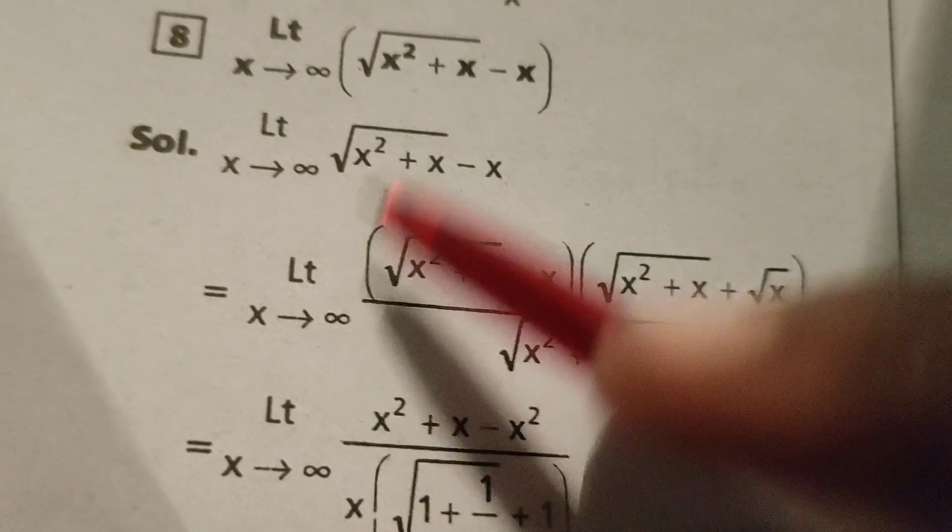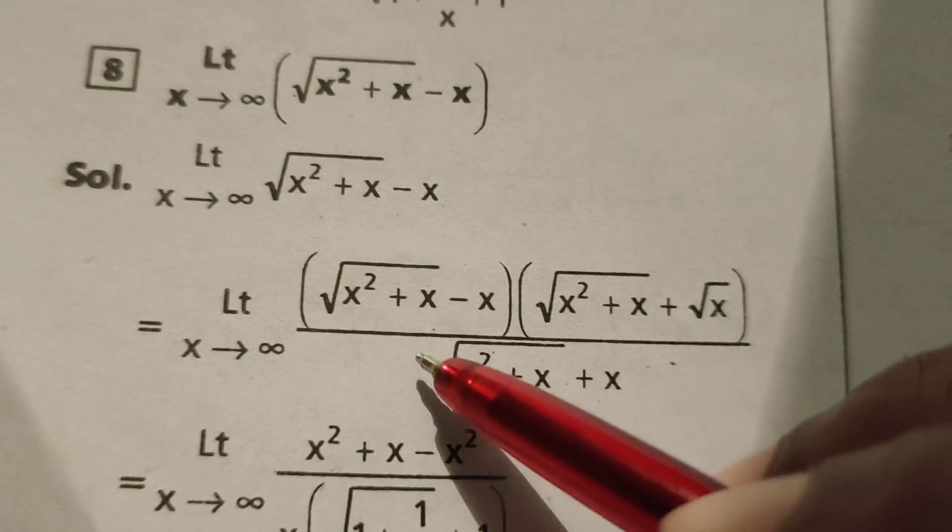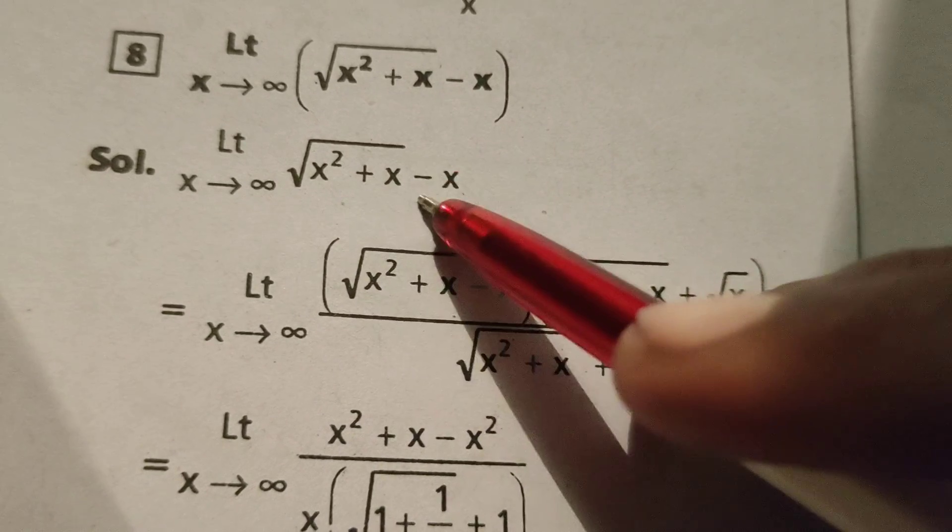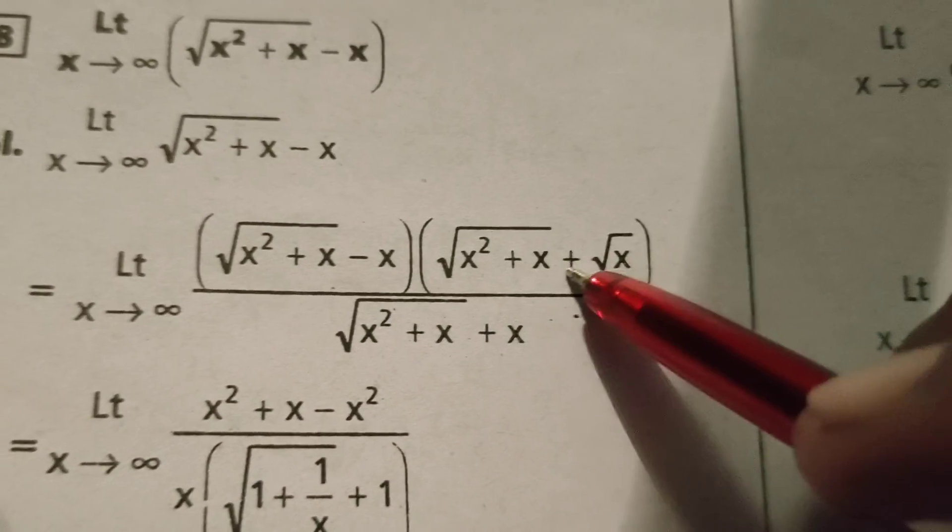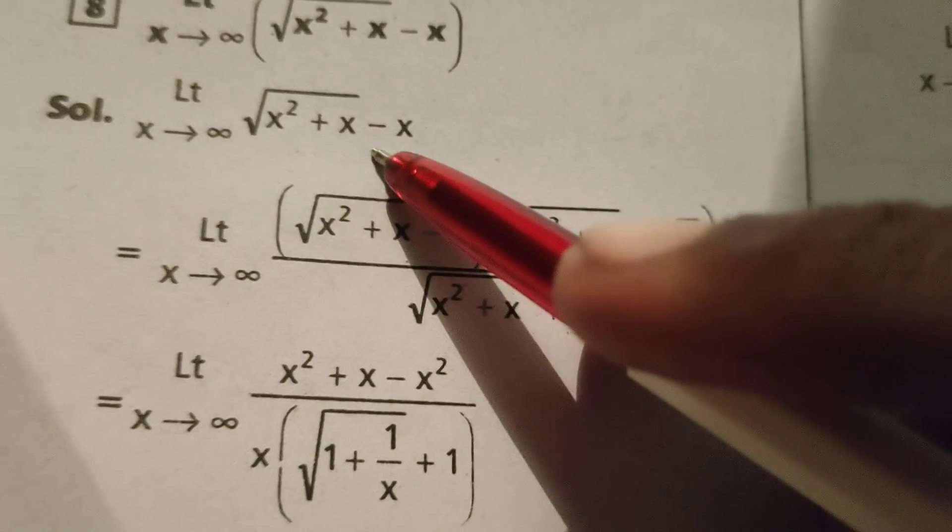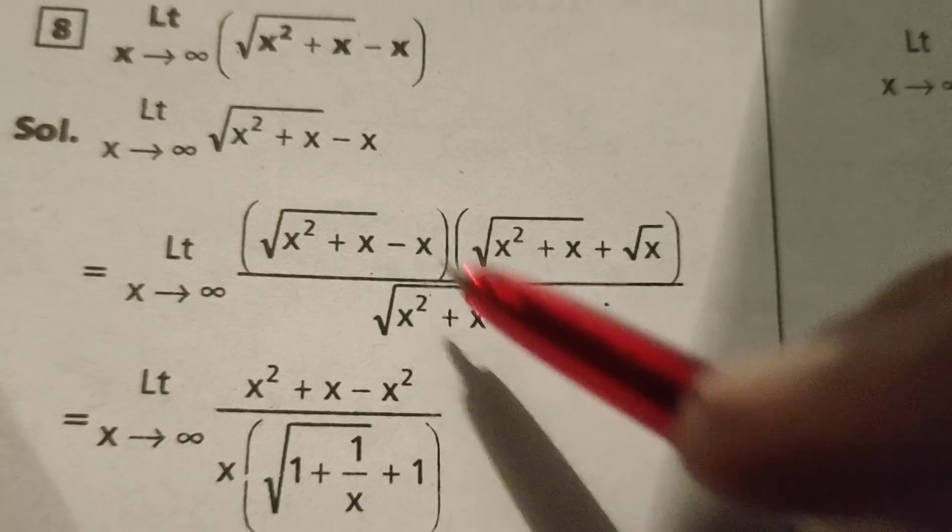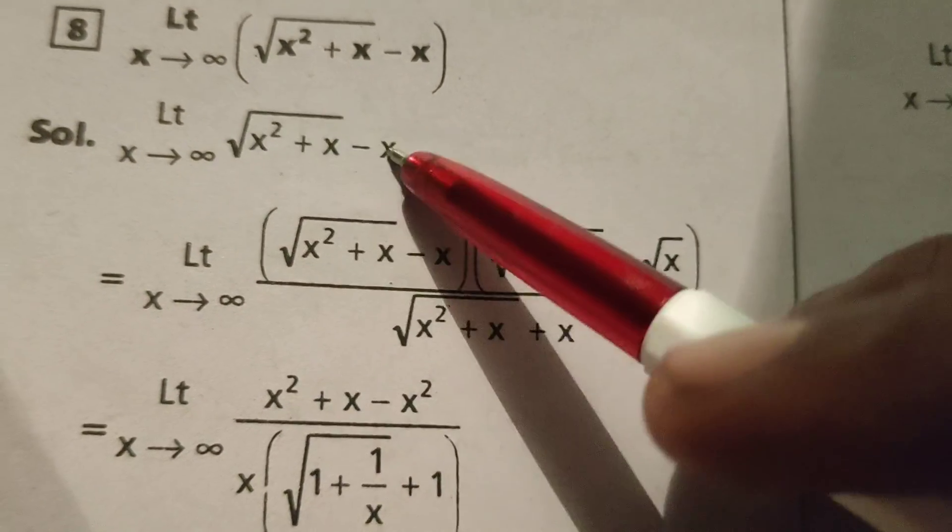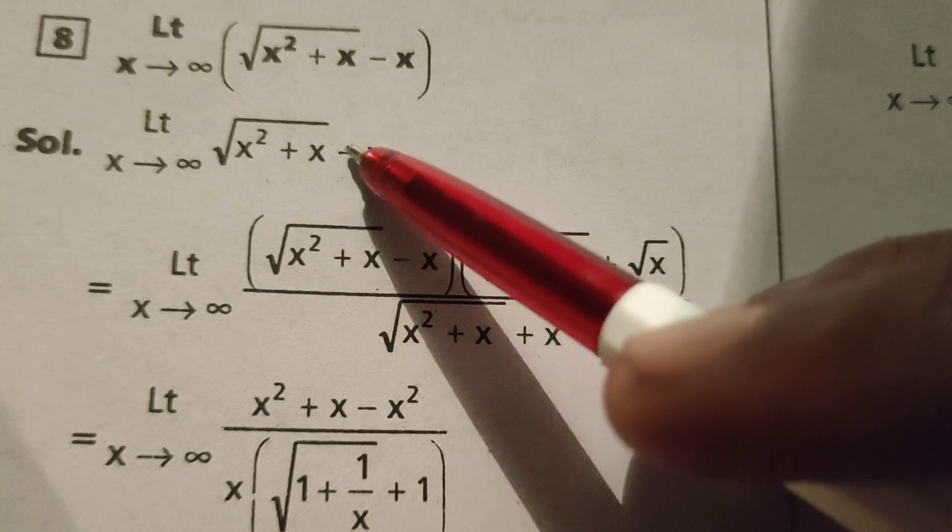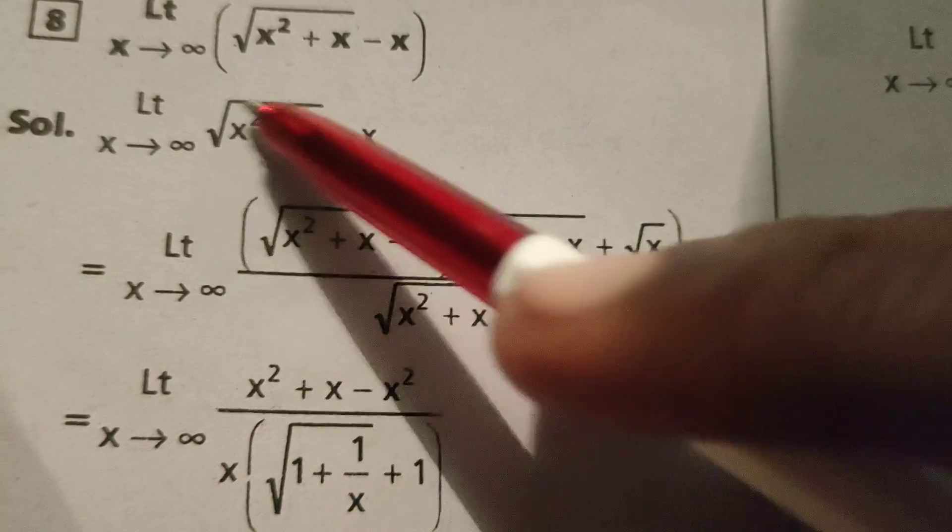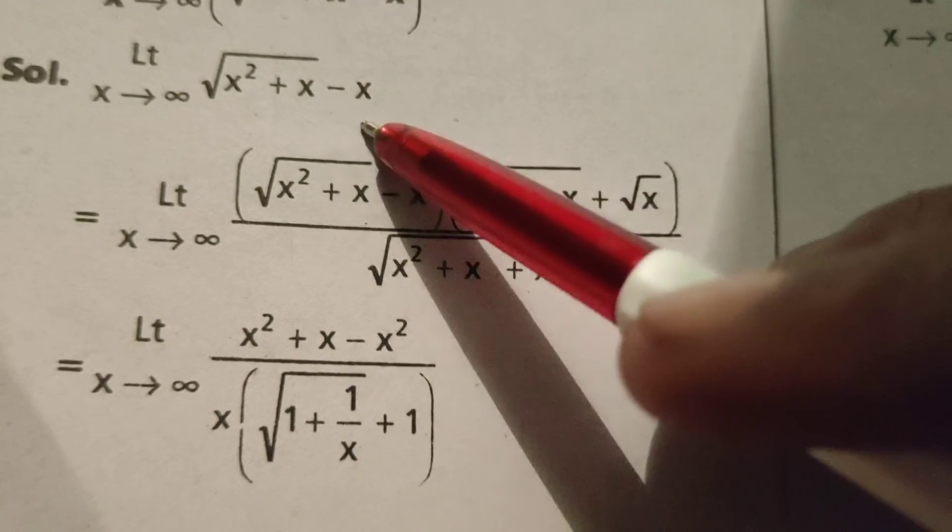Here write the given problem, limit x tends to infinity. In this, opposite sign multiplying numerator and denominator by the given limit of the function. Here given limit of the function, write opposite sign means plus x, I mean root of x square plus x plus x.